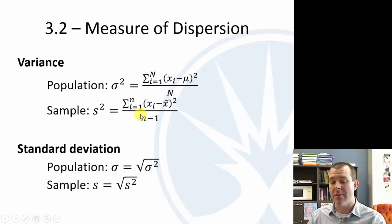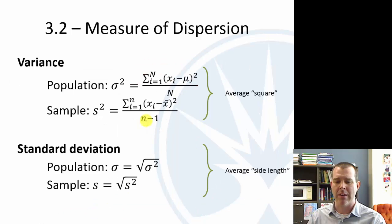Now you may notice there's an n minus 1 here. Whereas, so for the population we divide by n. For the sample we divide by n minus 1. I think I, did I put a note here? No I didn't.